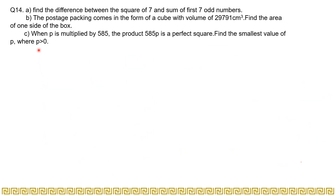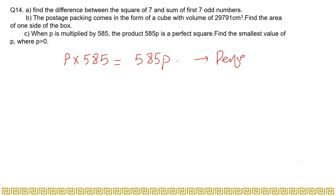Now let's solve the final part, part C: when p is multiplied by 585, the product 585p is a perfect square. So when you multiply p by 585 and get the product 585p, that product is a perfect square. On its own, 585 is not a perfect square, so you have to find the value p which when multiplied with 585 gives you a perfect square.